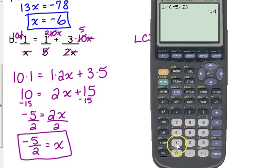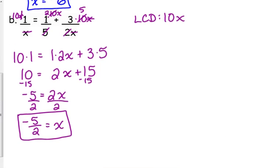When we plug it into the right side, that should give us 1 over 5 plus 3 over, we've got to put the denominator in parentheses, 2 times negative 5 over 2. Make sure that's in parentheses. It gives us negative 0.4. Just be careful with parentheses when you're checking these.